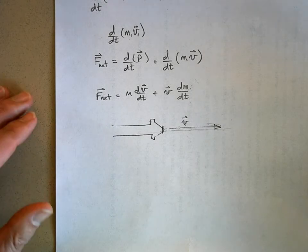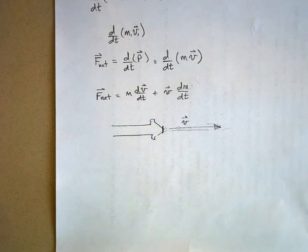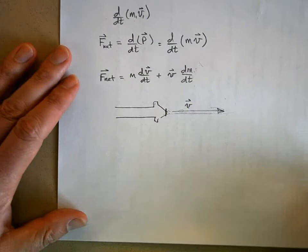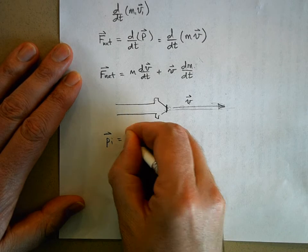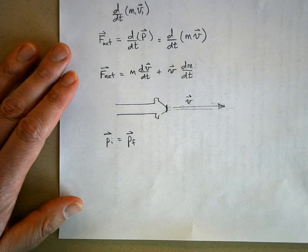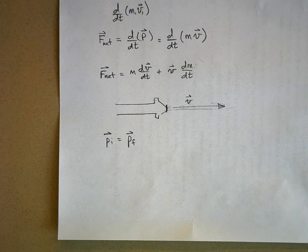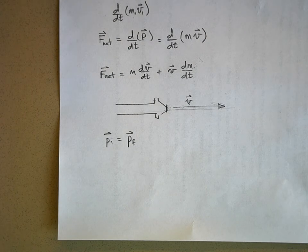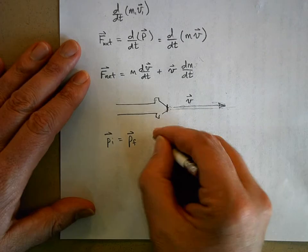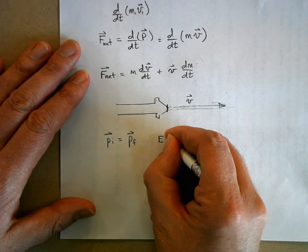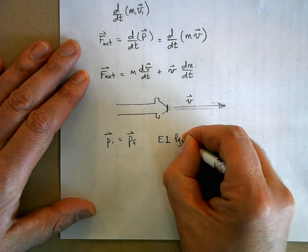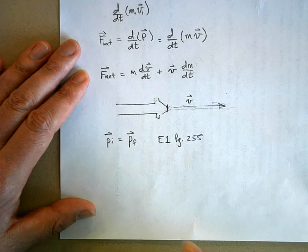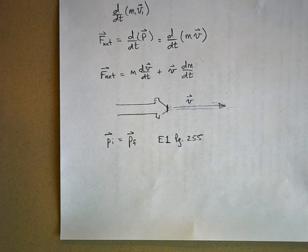Now I'd like you to use this idea of conservation of momentum - p_initial equals p_final - and solve the first example problem on page 255. Please do example one on page 255, and I'll give you a few minutes to do that and then we'll move on to the next thing.